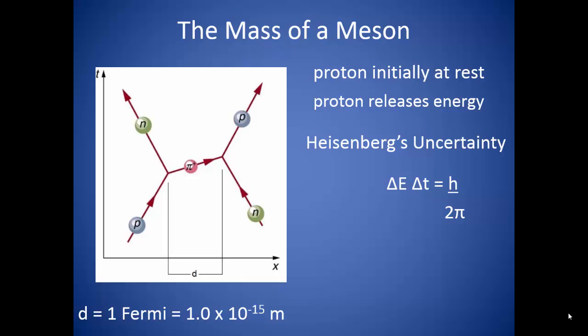In this situation, energy does not have to be conserved if the time period involved is very, very small. So the energy from the proton needed to create the meson times the time it takes for the meson to travel to the neutron is equal to Planck's reduced constant.